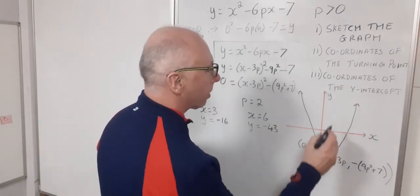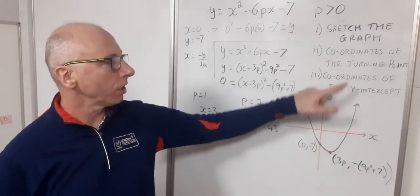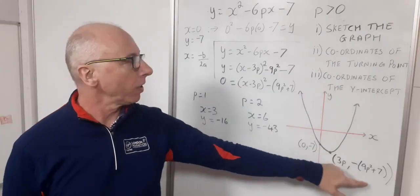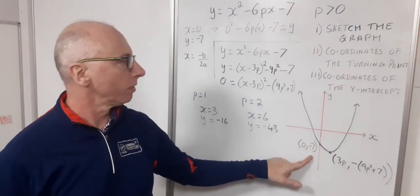And that completes our question. So sketch the graph. That's the sketch of the graph with the coordinates of the turning point. That's what they are. And the coordinates of the y-intercept is 0 minus 7.